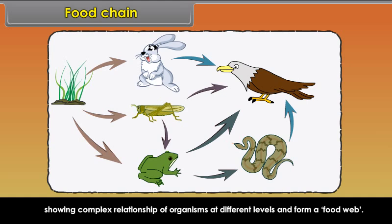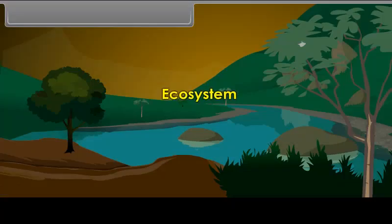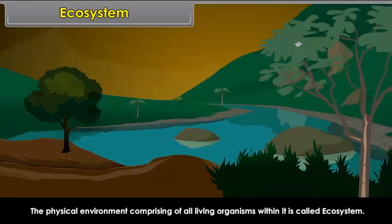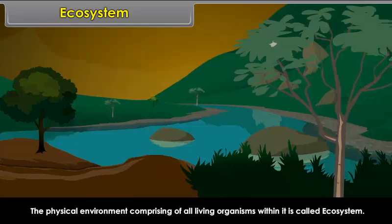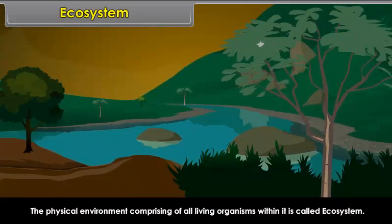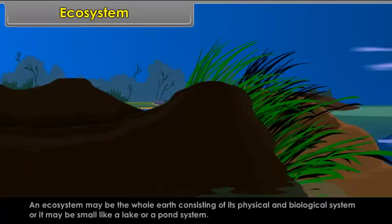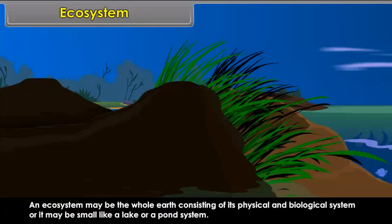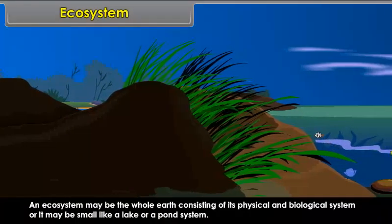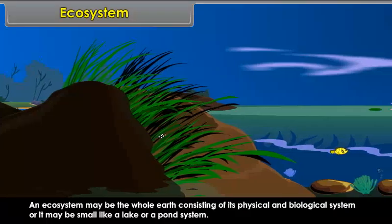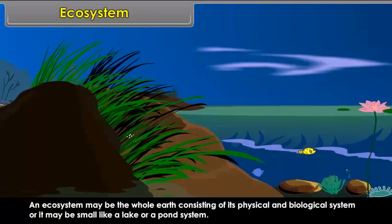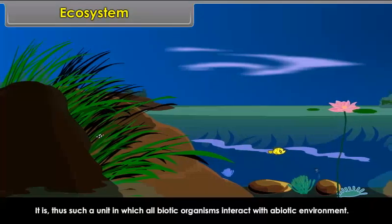Ecosystem: The physical environment comprising all living organisms within it is called an ecosystem. An ecosystem may be the whole earth consisting of its physical and biological system, or it may be small like a lake or a pond system. It is thus a unit in which all biotic organisms interact with the abiotic environment.